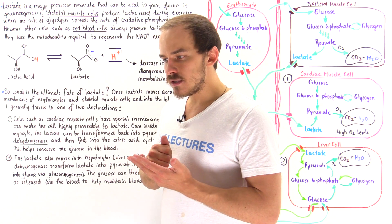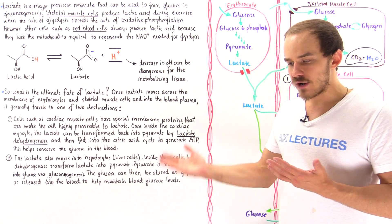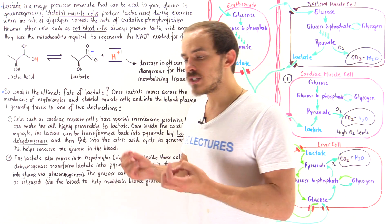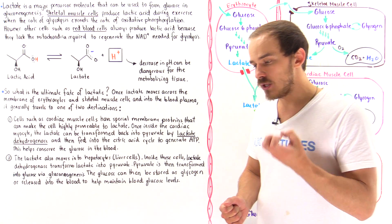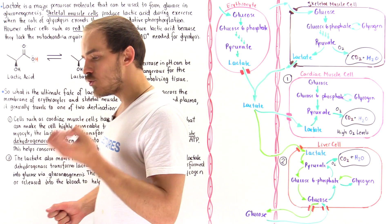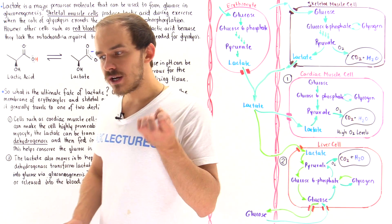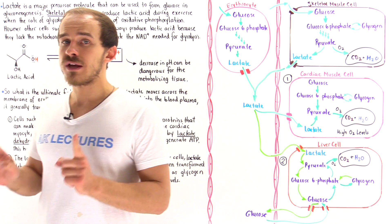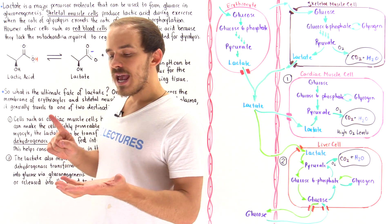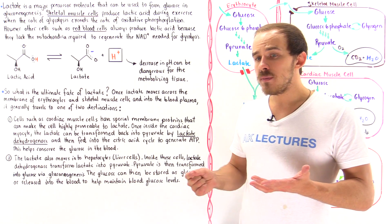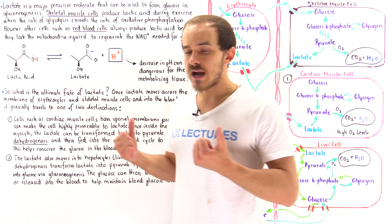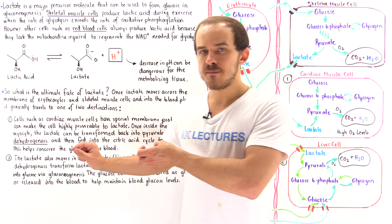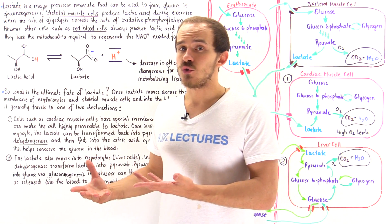Glycolysis, which is basically used to form ATP molecules and pyruvate molecules from glucose, is not a perfect process. It actually uses up important molecules known as NAD+ molecules — nicotinamide adenine dinucleotides. These molecules are needed by glycolysis to actually continue the process. But glycolysis doesn't regenerate these molecules once it takes place. That's precisely why under aerobic conditions, when we have plenty of oxygen inside the cell, pyruvate enters the mitochondria and we form more ATP molecules, and we also regenerate those NAD+ molecules.